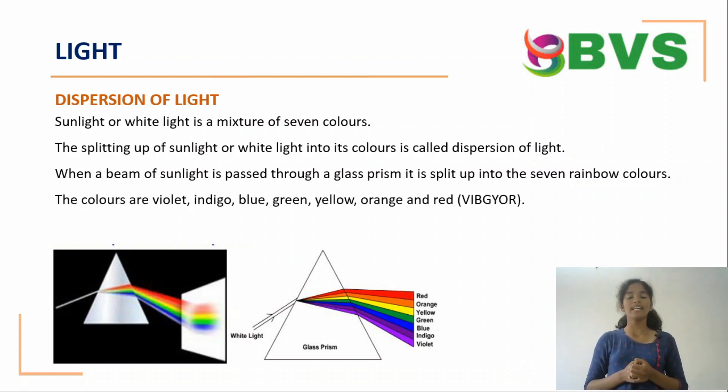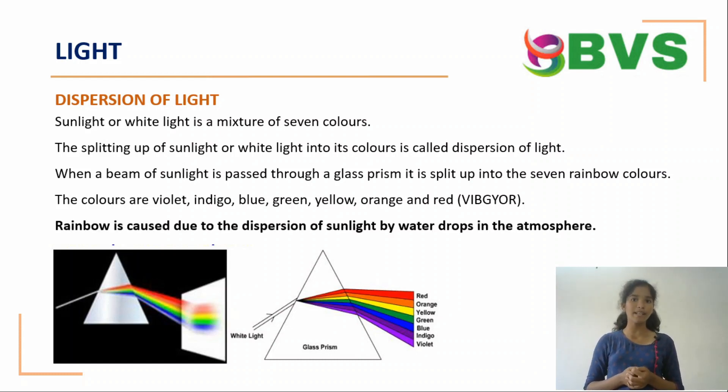The colors are violet, indigo, blue, green, yellow, orange, and red. Rainbow is caused due to the dispersion of sunlight by water drops in the atmosphere.